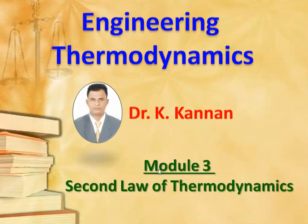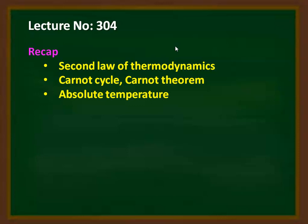This is Module 3, where we are discussing the second law of thermodynamics. Lecture number 304 recaps from the previous three lectures in the third module. We discussed the second law of thermodynamics — the Kelvin-Planck statement and the Clausius statement — studied the Carnot cycle, derived its efficiency, discussed the Carnot theorem and its corollary, and studied the absolute temperature scale given by Kelvin.